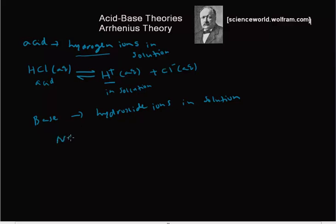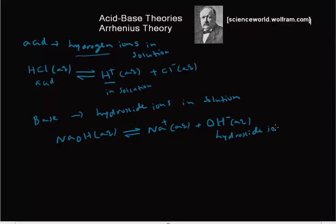If I have sodium hydroxide aqueous dissolved in water, it dissociates to produce sodium ions and hydroxide ions — OH⁻. Since sodium hydroxide can produce these hydroxide ions in solution, Arrhenius called substances like these a base. So sodium hydroxide is a base because if you add it to water, you get hydroxide ions, OH⁻, in water.